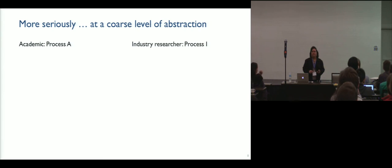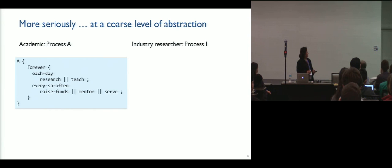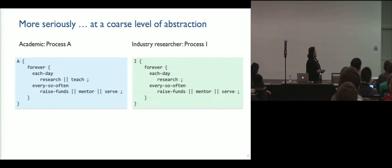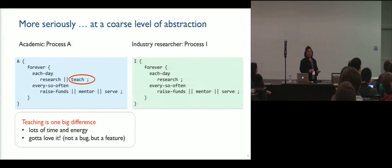at a very coarse level of abstraction, let's think of an academic as a process A and an industry researcher as a process I. So what does an academic do? Forever, until eternity, each day they're going to do research, they're going to do some teaching. And every so often, because we are using a lot of abstraction, they will raise funds, they will do some mentoring, and they will do some service. And on the industry side too, forever you will do research, every so often you will be asked to raise funds, do mentoring, and do some service.